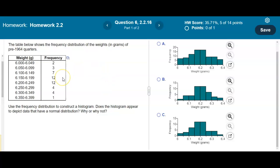Before we use StatCrunch, we can look at what our frequency looks like for the first class. The first class, from 6.000 to 6.049, has a frequency of two. Looking at option A, this goes all the way up to above five, so we can rule out A. Looking at B and C, we're not sure if this represents one or two.